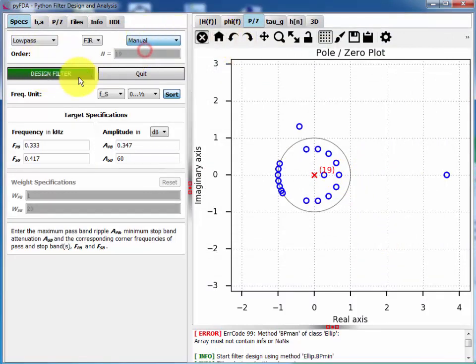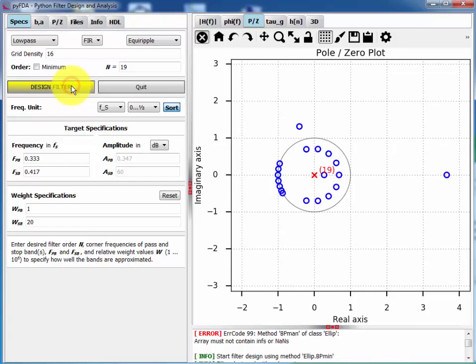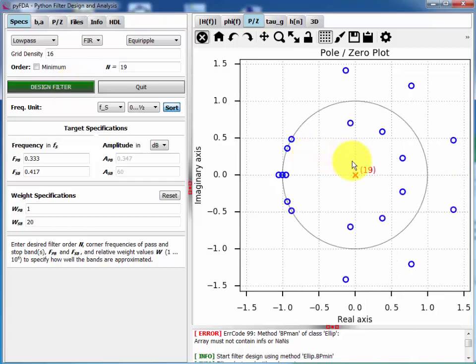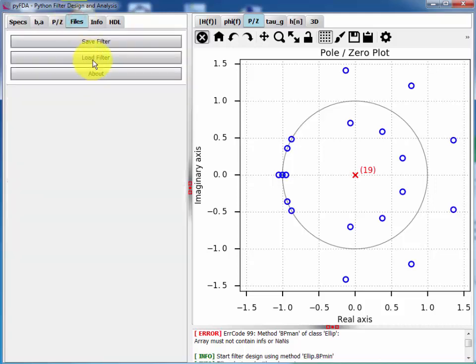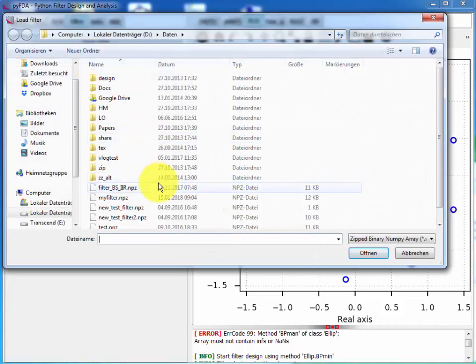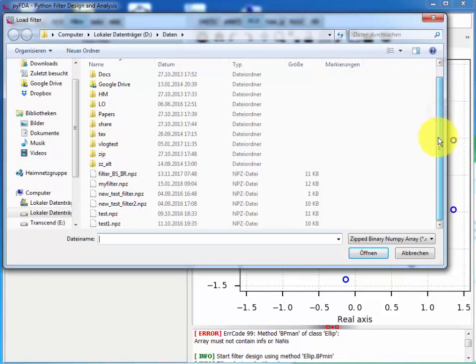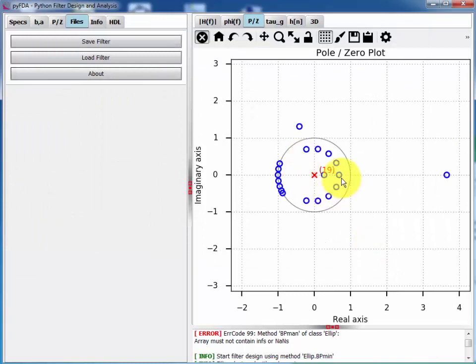Then I'll redesign it. And if I like my strange asymmetrical filter I had before, I can reload this. Here is my filter. And you see here is my warped filter again.